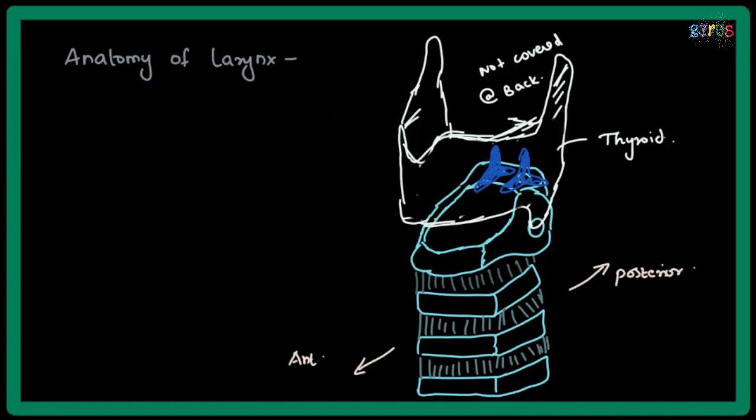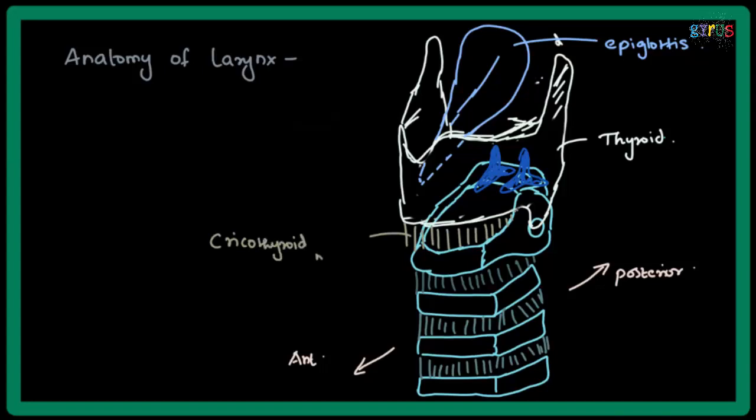Another cartilage is the epiglottis. It is attached to this thyroid cartilage. And this is the cricothyroid membrane, a membrane between the thyroid and cricoid cartilage. It is cut during emergency cricothyroidotomy.